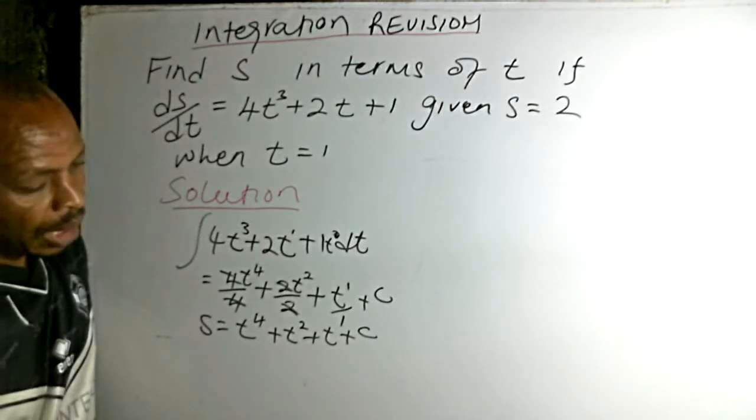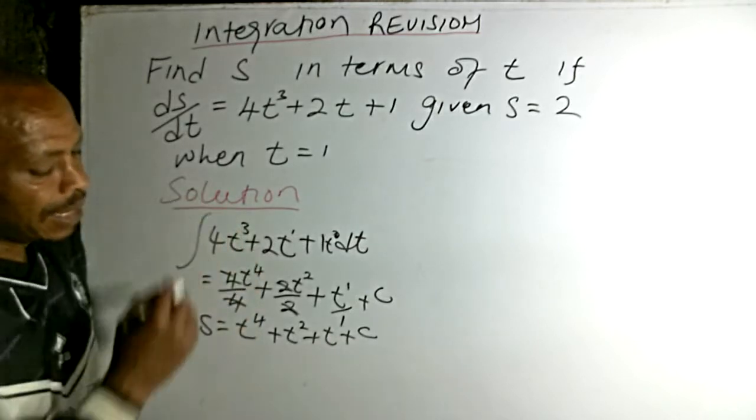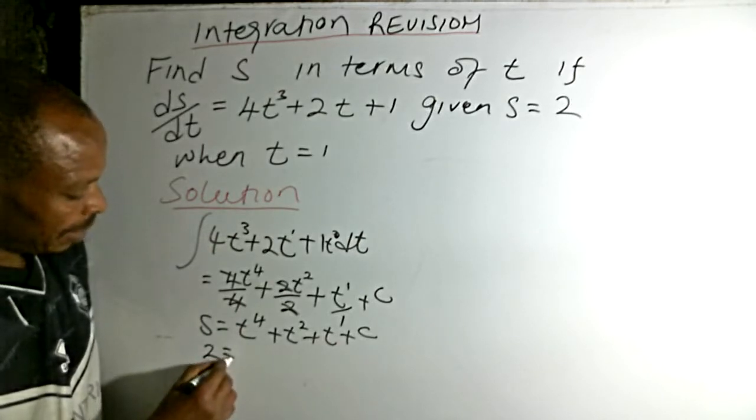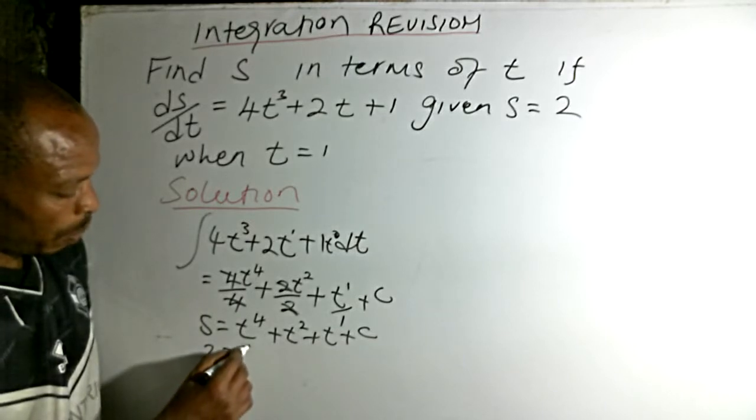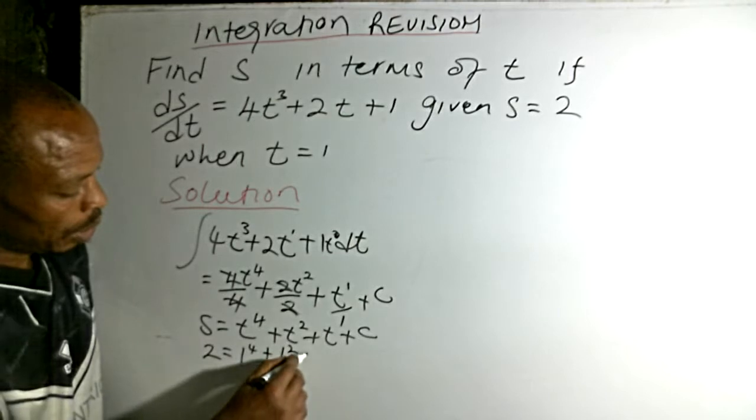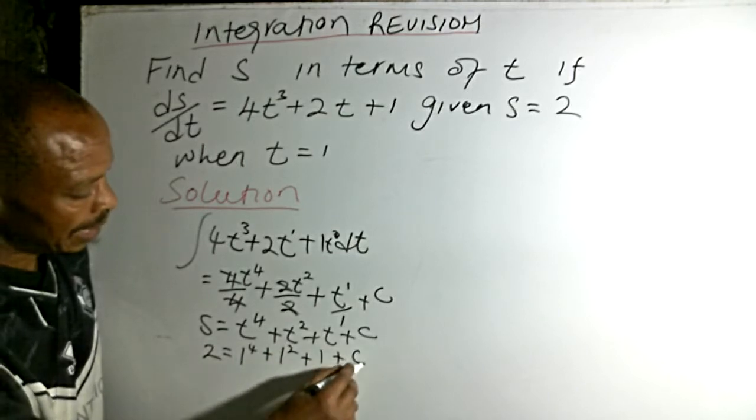We are told that s equals 2 when t equals 1, so we substitute: 2 equals 1 to power 4 plus 1 to power 2 plus 1 plus c.